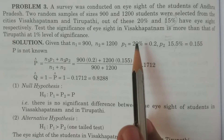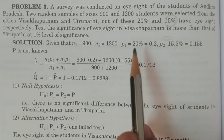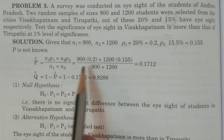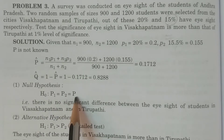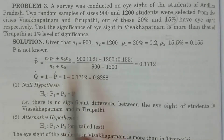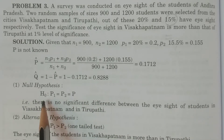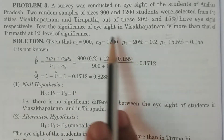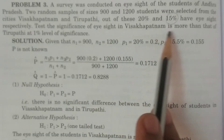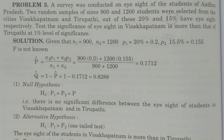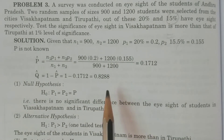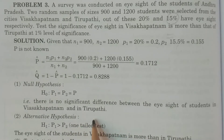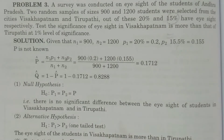The null hypothesis H0 is: Capital P1 is equal to Capital P2 (= P). There is no significant difference between the eyesight of students in Visakhapatnam and Tirupati. We test whether the eyesight significance in Visakhapatnam is more than that of Tirupati.